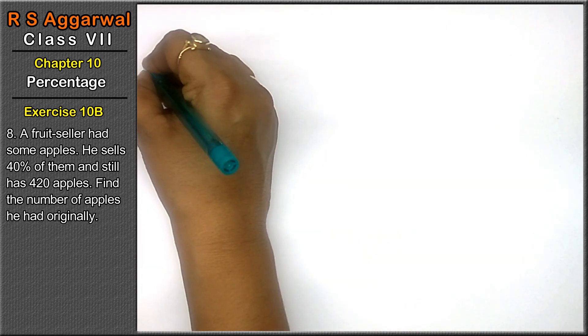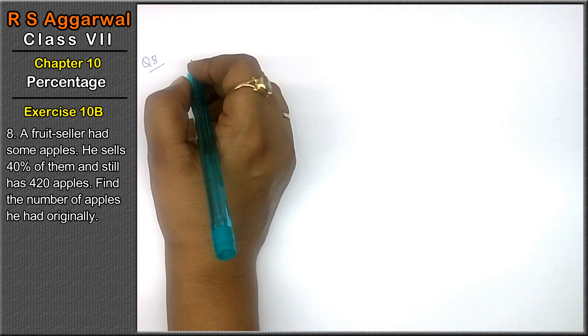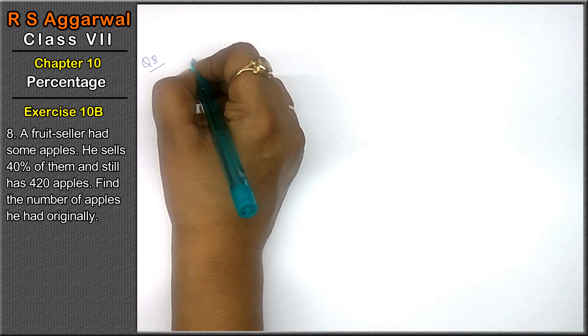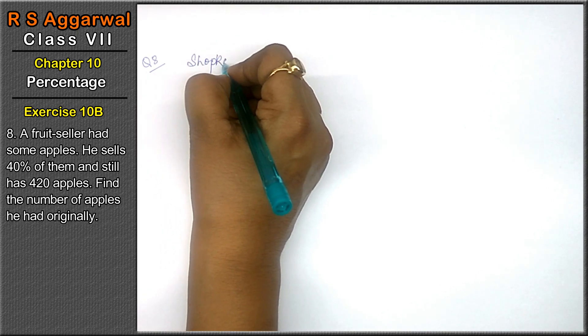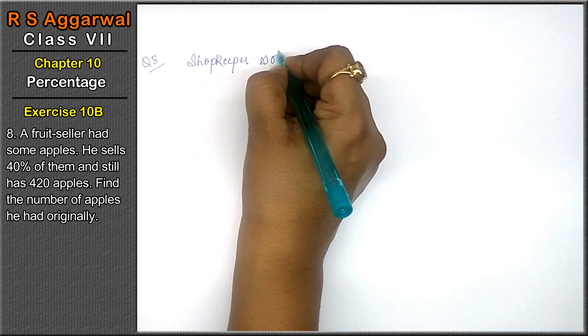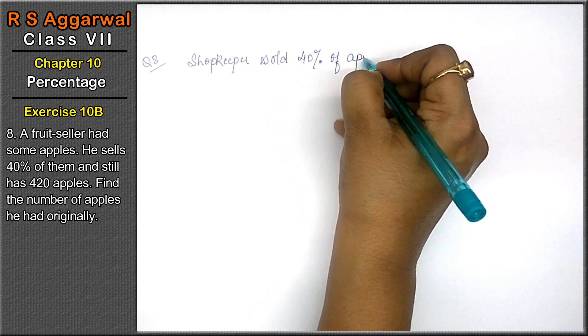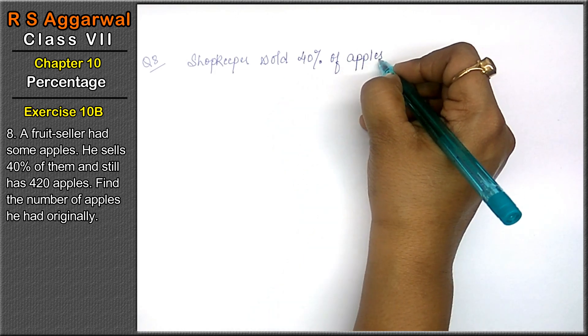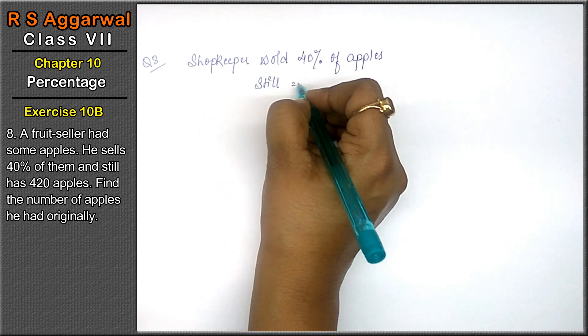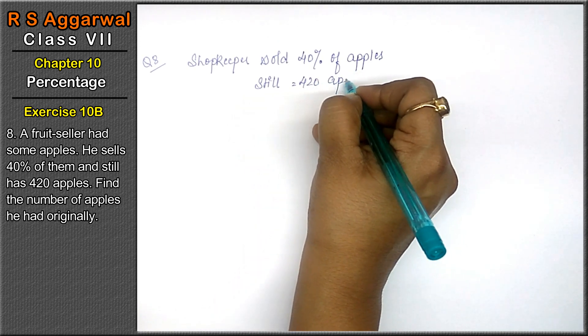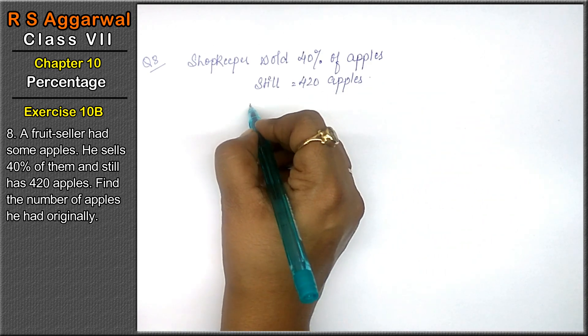Let's do question number 8. A fruit seller has some apples. He sells 40% of them. The shopkeeper sold 40% of apples and still has 420 apples. Find the number of apples he had originally.